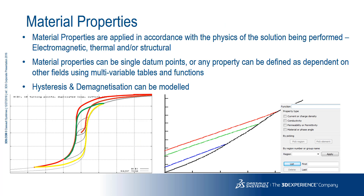When simulating the performance of an electromagnetic device, a critical property to accurately represent is the behaviour of the materials used. Opera material properties define how the material will behave in the current field, temperature and stress. Material data can be defined in the software or imported from elsewhere if you have your own material library. For ultimate accuracy, we allow the use of hysteresis, as in the graph on the bottom left, and demagnetization curves, as in the graph on the bottom right.